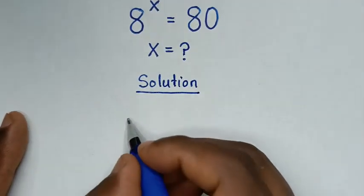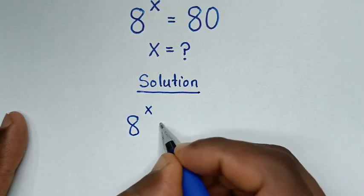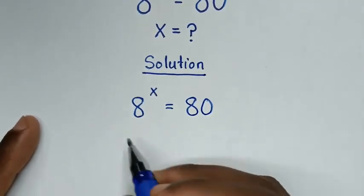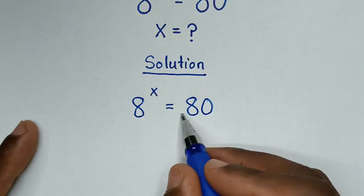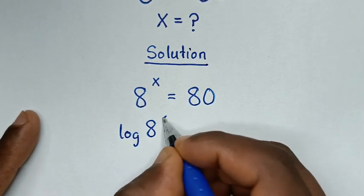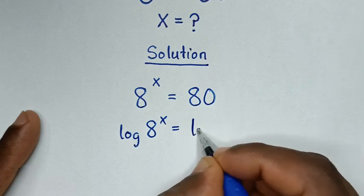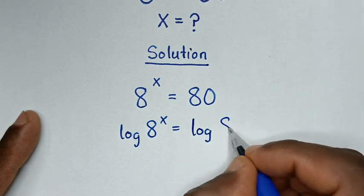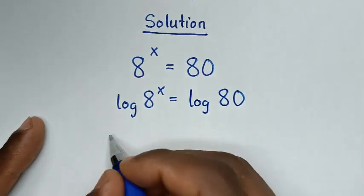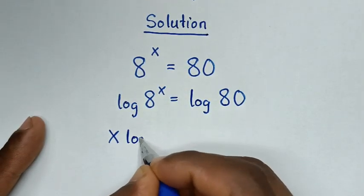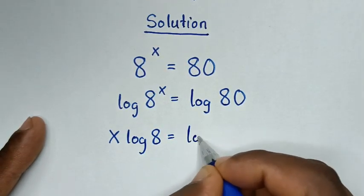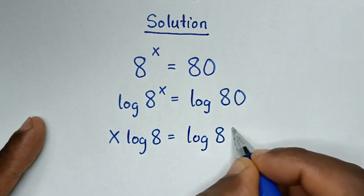From our problem which is 8 power x is equal to 8, in the first step we'll apply log in both sides. So it will be log of 8 power x is equal to log of 8. Then this power of x will move to the base. So it will be x log of 8 is equal to log of 8.